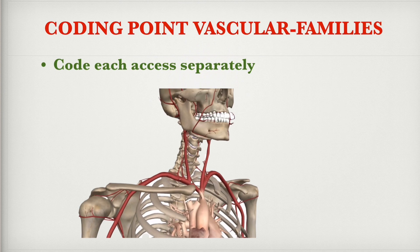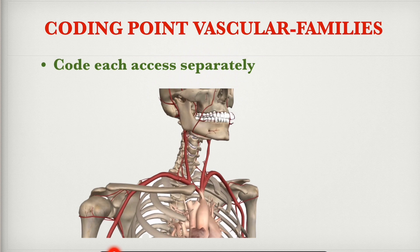The next coding point: code each access separately. For example, if the catheter is placed in the right subclavian and left subclavian arteries for imaging of the upper extremities, each would be separately coded — because to reach the left subclavian, the catheter must be drawn back into the innominate artery and then into the left subclavian, making it a different access.